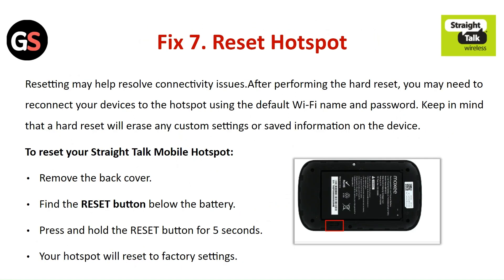Fix 7: Reset the hotspot. Resetting may help resolve connectivity issues. After performing the hard reset, you may need to reconnect your device to the hotspot using the default Wi-Fi name and password. Keep in mind that the hard reset will erase any custom settings or saved information on the device. To reset your Straight Talk mobile hotspot, remove the back cover, find the reset button below the battery, and press and hold the reset button for 5 seconds.